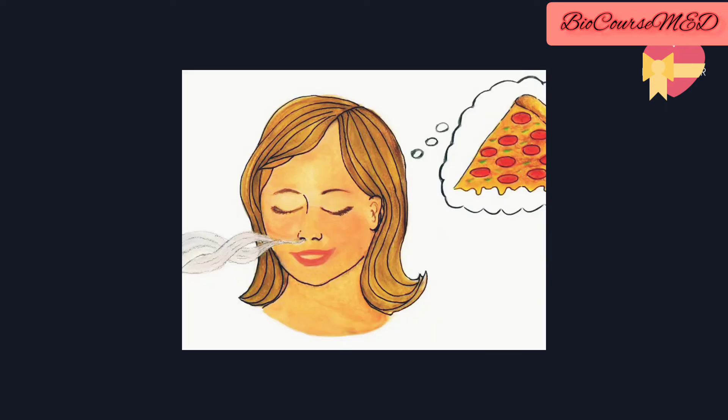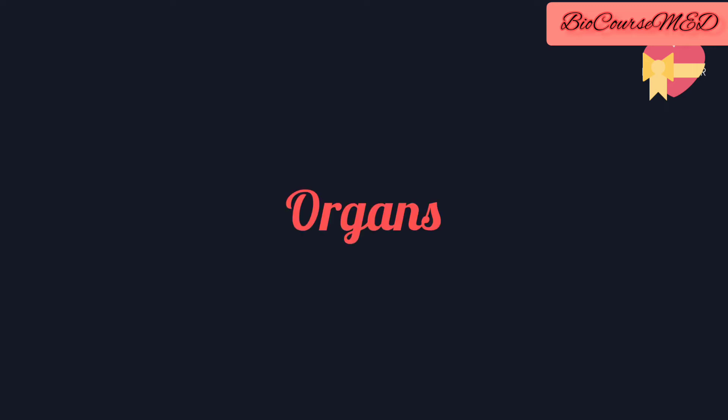Now let's discuss how the respiratory system works. Your respiratory system is a network of organs and tissues that helps you breathe. The system helps your body absorb oxygen from the air so your organs can work properly, and it also cleans waste gases such as carbon dioxide from your blood. Common problems include allergies, disease, or infections.